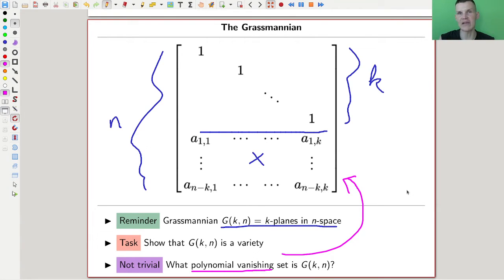It's not even quite clear whether it should be a variety. It is, and to see that it's kind of beautiful and gives you an idea why so many constructions that you see in linear algebra are actually realizable as a variety, right? So the task for today is show that this beast here is a variety. So find some polynomials.